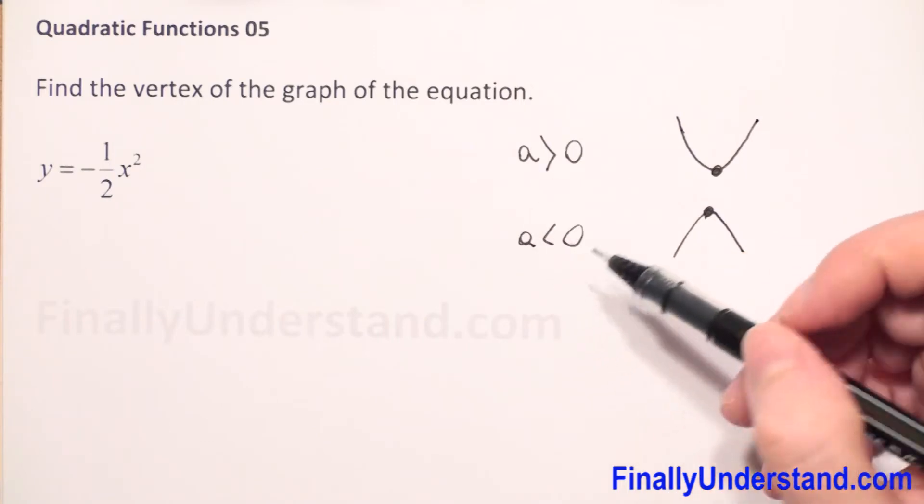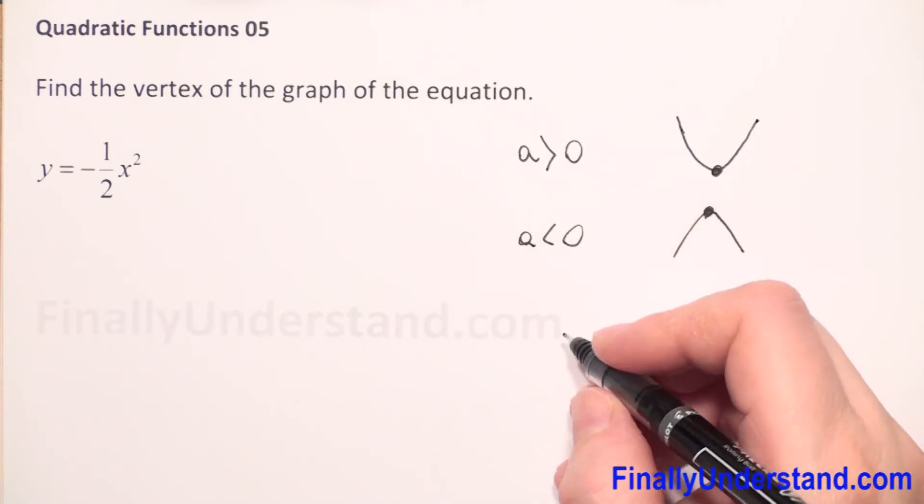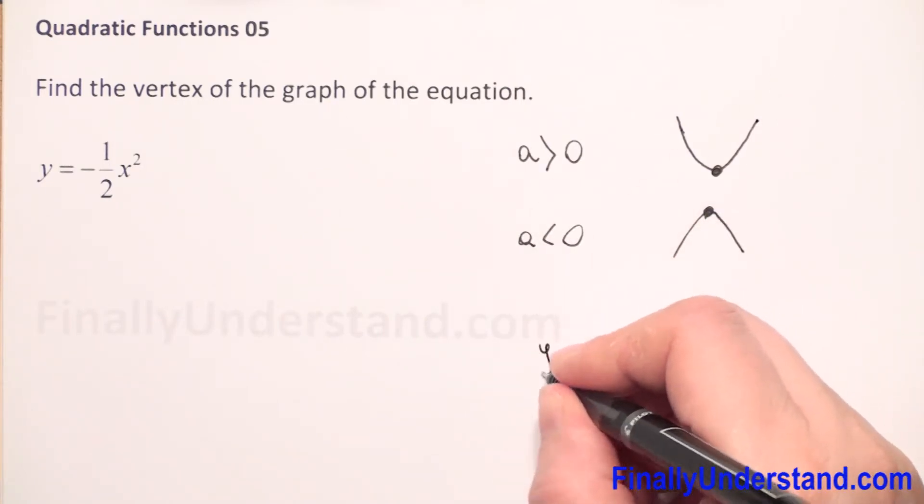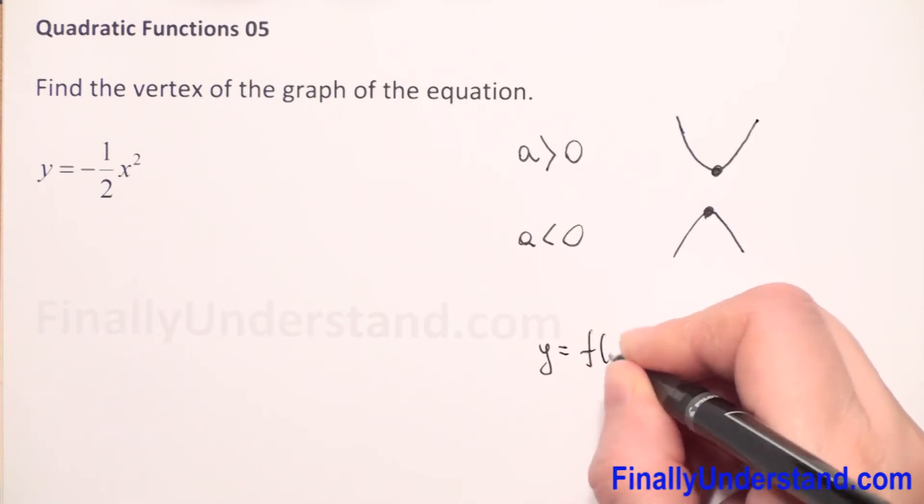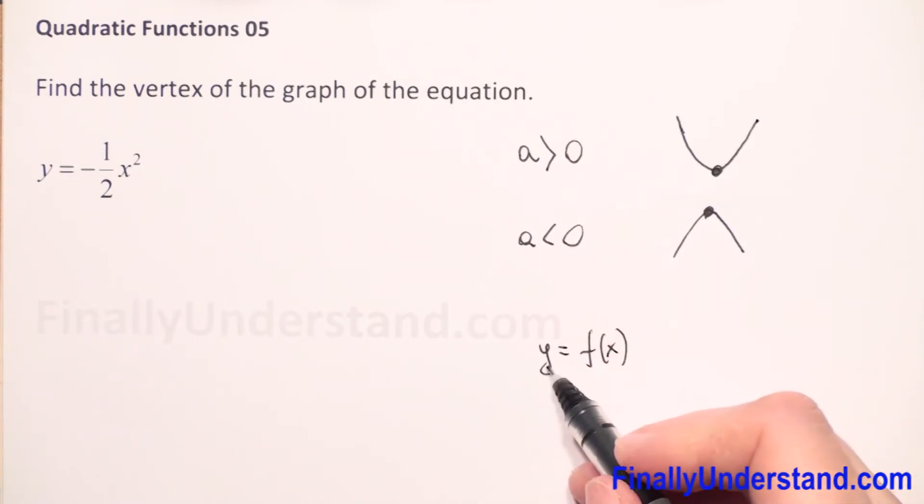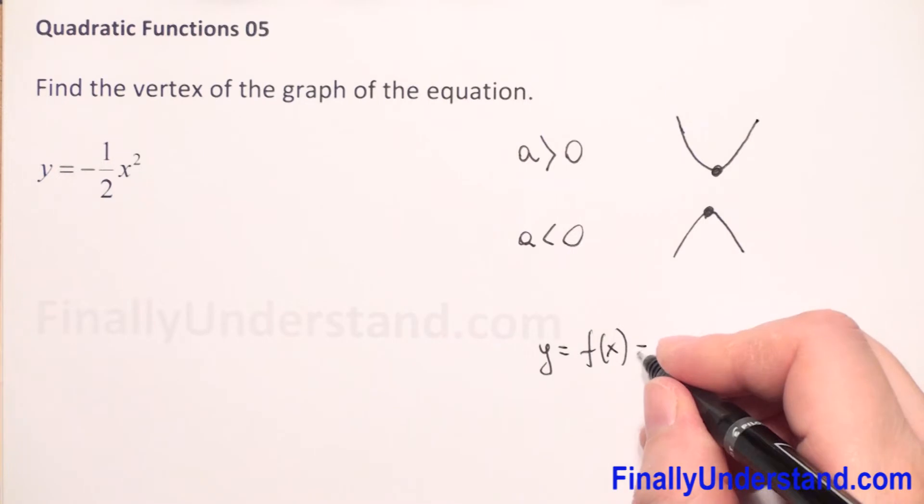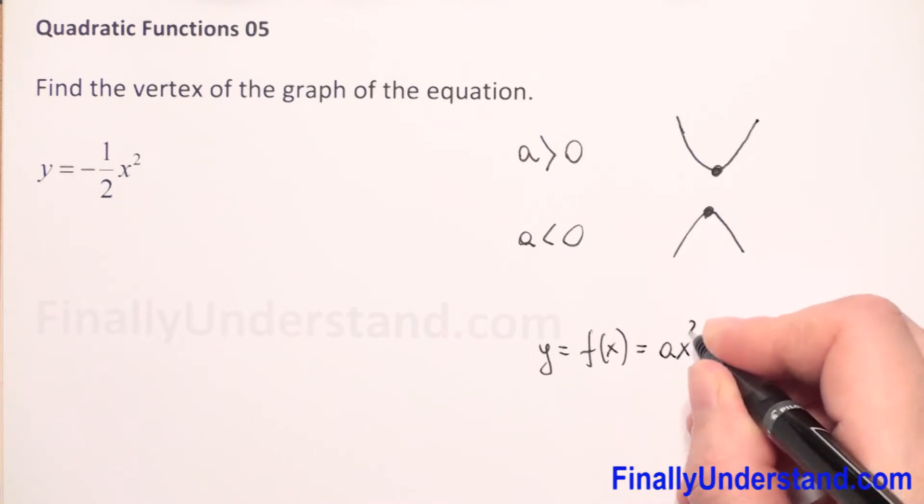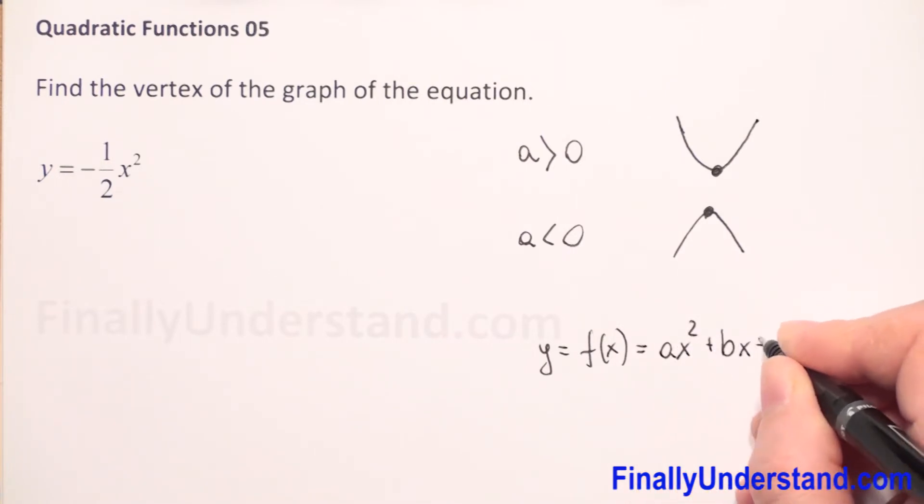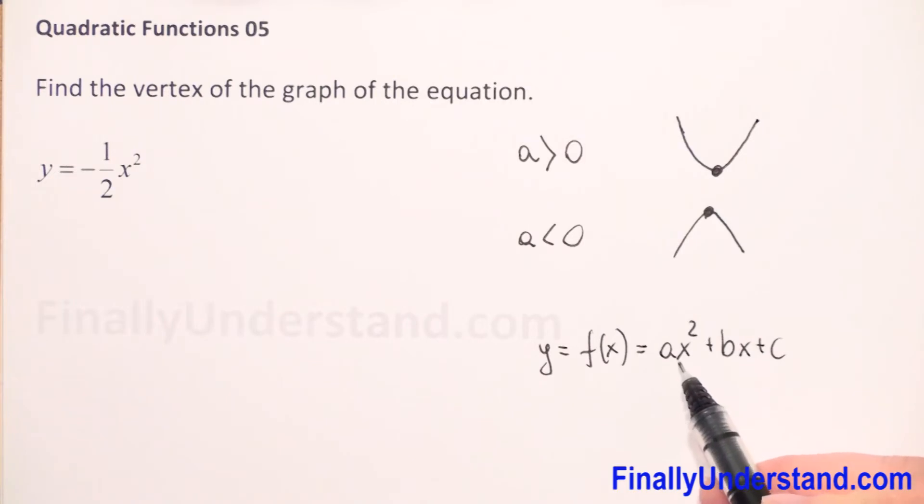What is the a? How we find the a? When we have general form of quadratic function y equals, we can write f of x, it doesn't matter if you use y or f of x, this is equal a x squared plus b x plus c. So a is coefficient before x squared.